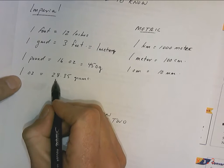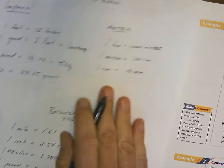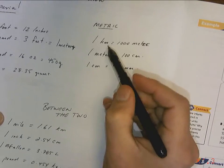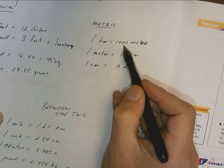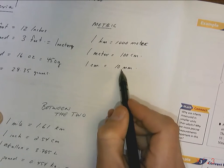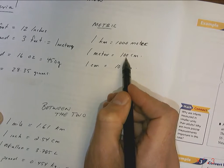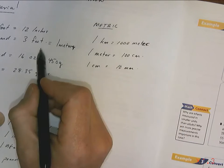In metric, you need to know that a kilometer is a thousand meters, that a meter is a hundred centimeters, and one centimeter is 10 millimeters. A meter stick is a hundred centimeters, which means a hundred centimeters is pretty close to three feet, 3.3 feet to be exact.